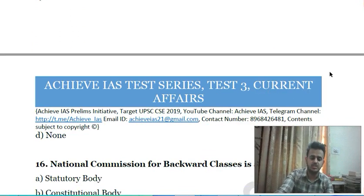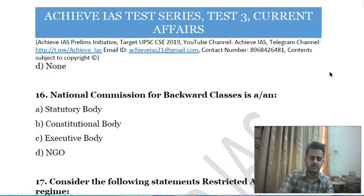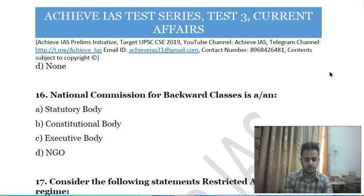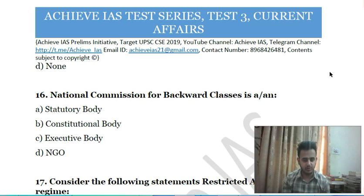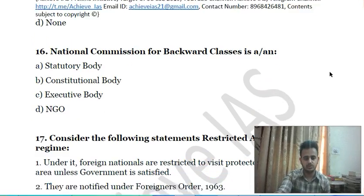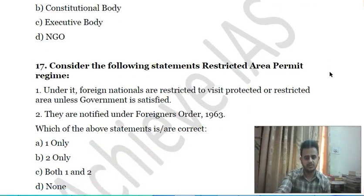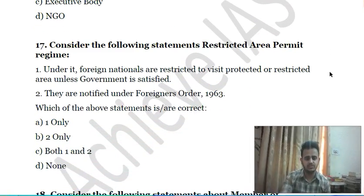Sixteenth question: the National Commission for Backward Classes is: A) a statutory body, B) a constitutional body, C) an executive body, D) an NGO. Choose the correct answer.